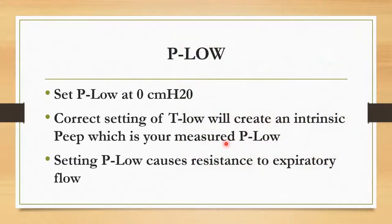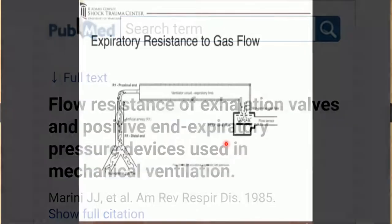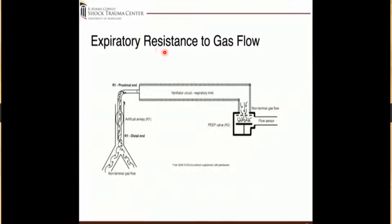As mentioned, the P-low is set at zero. The correct setting of your T-low will create an intrinsic PEEP — your measured P-low. If you set the P-low at 5–10, this causes resistance to expiration. There's flow resistance through an exhalation valve and PEEP devices. Setting a P-low value forces gas through the expiratory valve, restricting flow. Since these releases are super brief, you want the best gradient — releasing P-high to ambient air creates the largest gradient and does not restrict flow. This produces very rapid release followed by return to P-high.